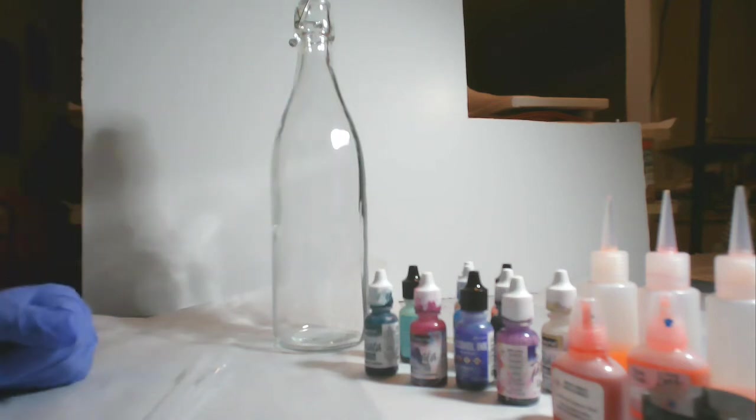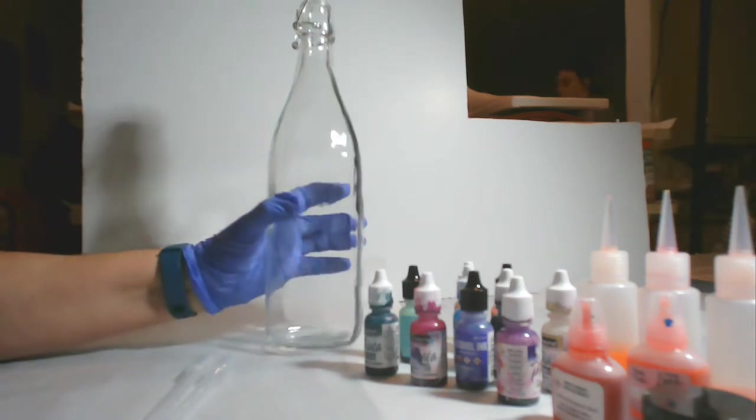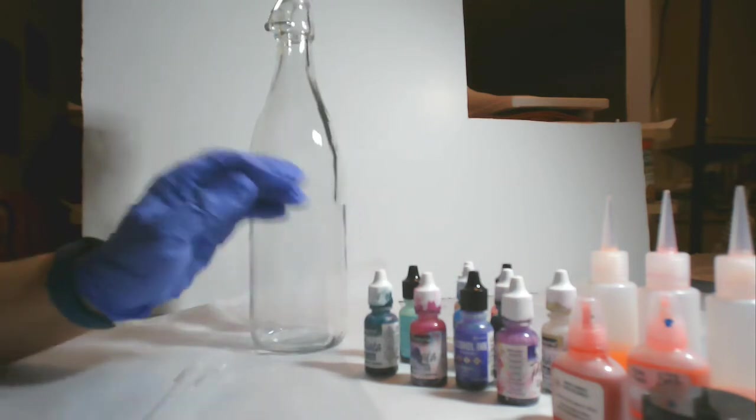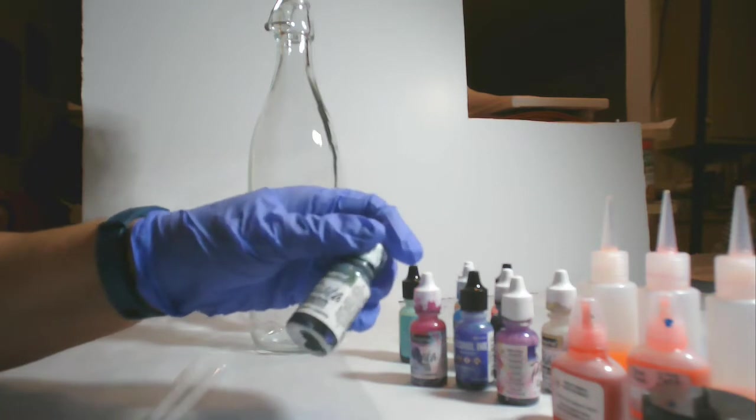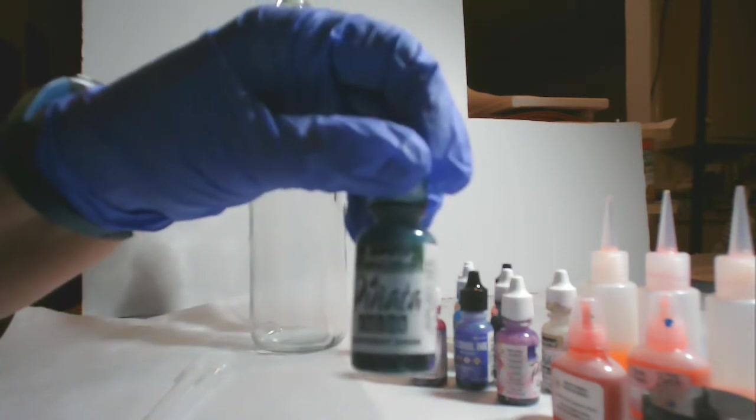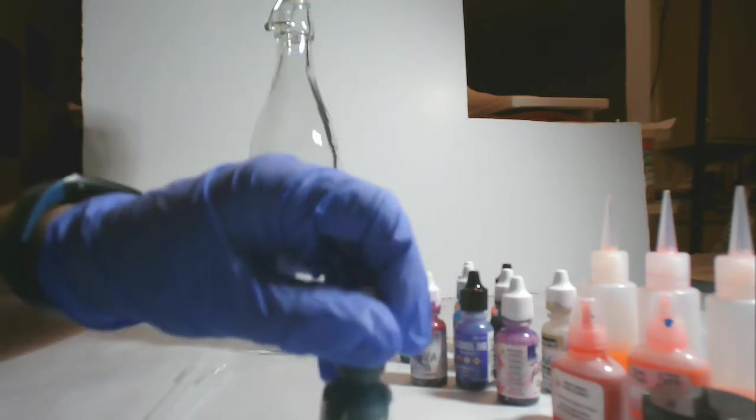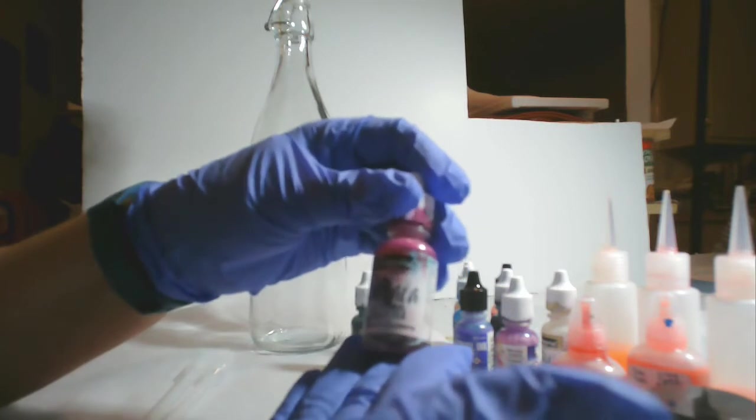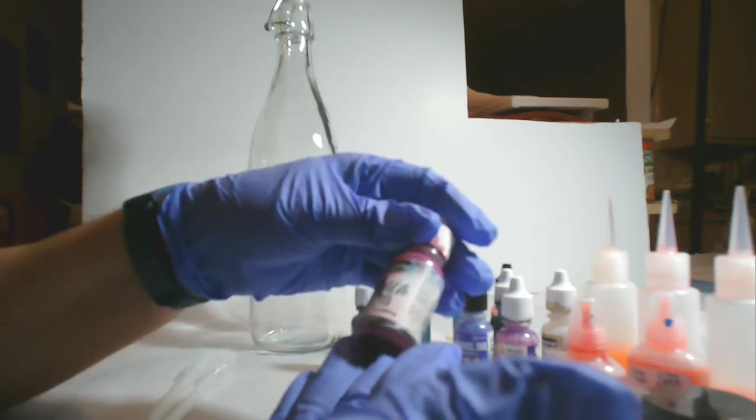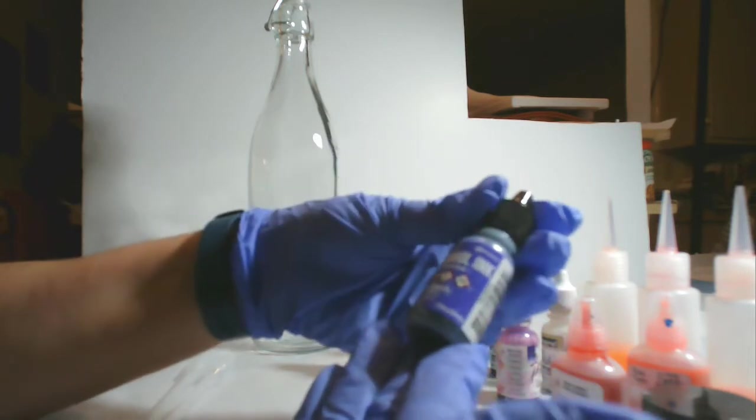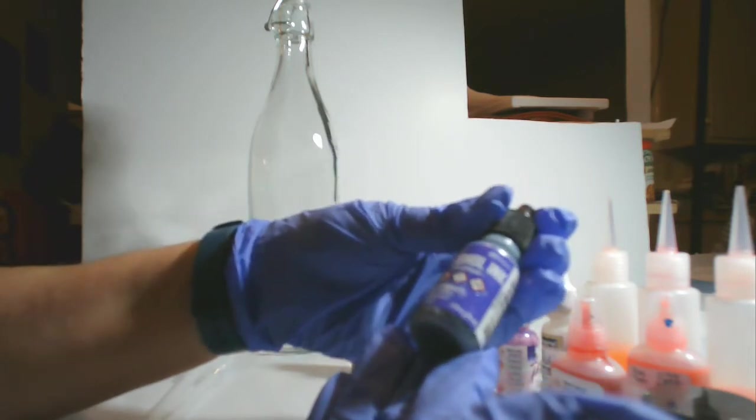Hey y'all, this is Kim with Creative Escapades. Today I'm going to be doing an alcohol ink project on this clear glass bottle. I've got different color alcohol inks - this is rainforest green and magenta, this is amnesty.